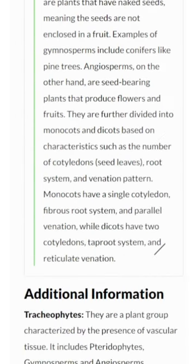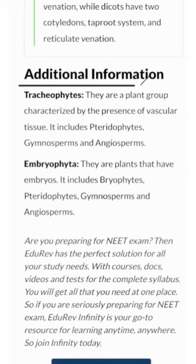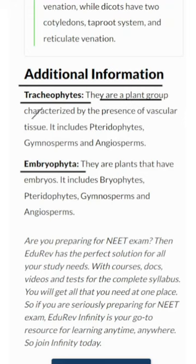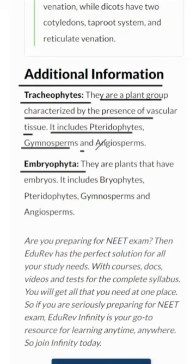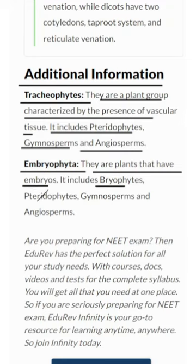Let's introduce two important terms that help us further understand plant classification: Tracheophytes and Embryophyta. Tracheophytes are characterized by the presence of vascular tissue, including pteridophytes, gymnosperms, and angiosperms. Embryophyta are plants that have embryos, encompassing bryophytes, pteridophytes, gymnosperms, and angiosperms.